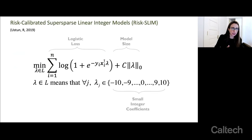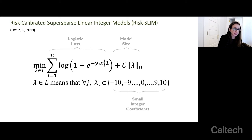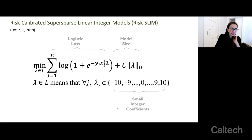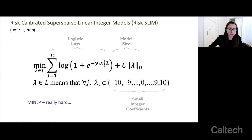The algorithm that produced the 2HELPS2B score uses a first term that ensures the model is accurate and well-calibrated to the data — this is the logistic loss used in logistic regression. There's also a model size term that keeps the model small with only six terms so a doctor can memorize it, and a set of constraints where coefficients must be between negative 10 and 10 — it chose one, one, one, one, and two. This is a mixed-integer nonlinear program that is quite difficult to solve, but that's a problem a computer scientist should handle, not a doctor. We've developed our own cutting plane methods to solve this within a relatively short time.